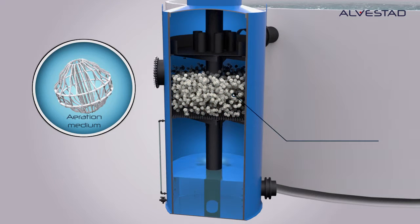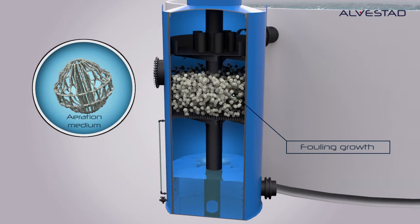Impurities such as dissolved organics in water from fish tanks will lead to heavy biofilm growth on the aeration media, called fouling.